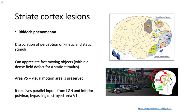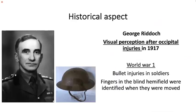An interesting phenomenon in striate cortex lesions is the Riddoch phenomenon: a dissociation of perception between kinetic and static stimuli. In a dense field defect where the person cannot perceive a static stimulus, the same person can appreciate fast-moving objects in that area. This is because area V5 (MT), important for judging motion, is preserved. Postulated mechanisms include spared islands of V1 passing coarse motion information to V5, or direct subcortical connections from the lateral geniculate nucleus to V5 via the pulvinar-superior collicular pathway, bypassing V1.